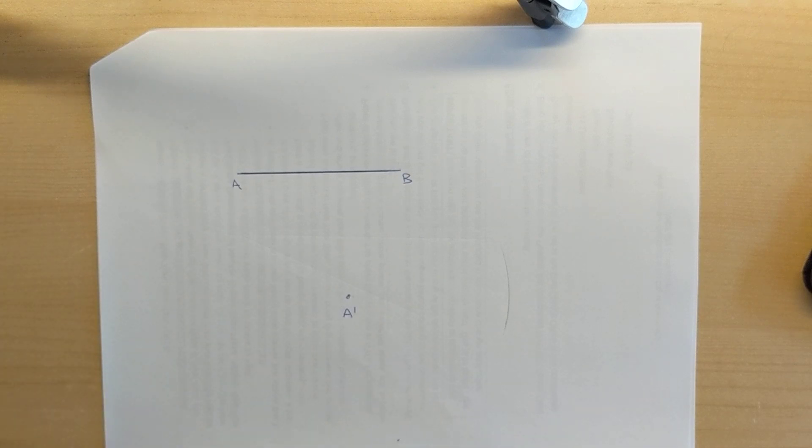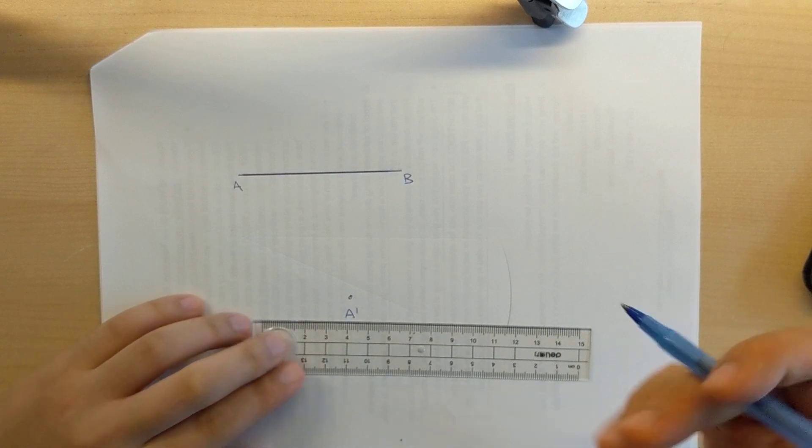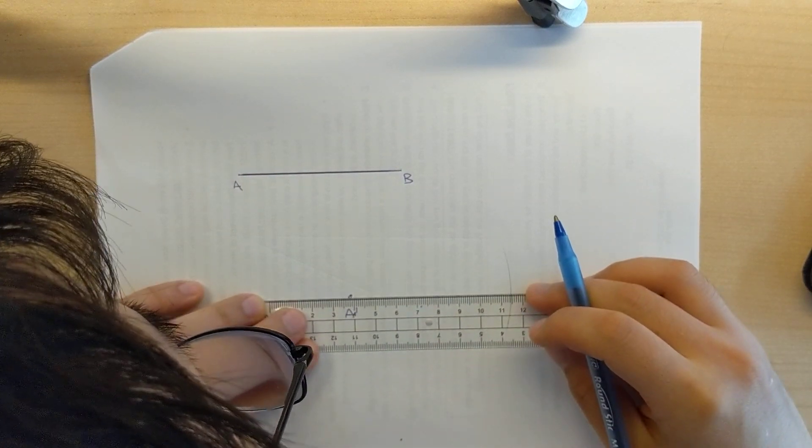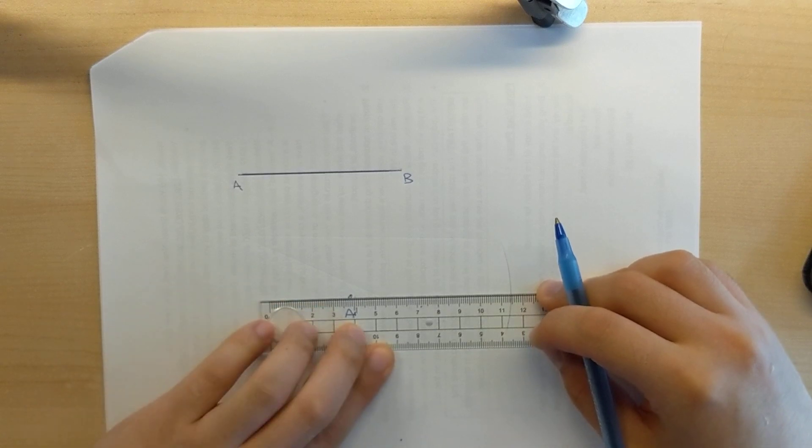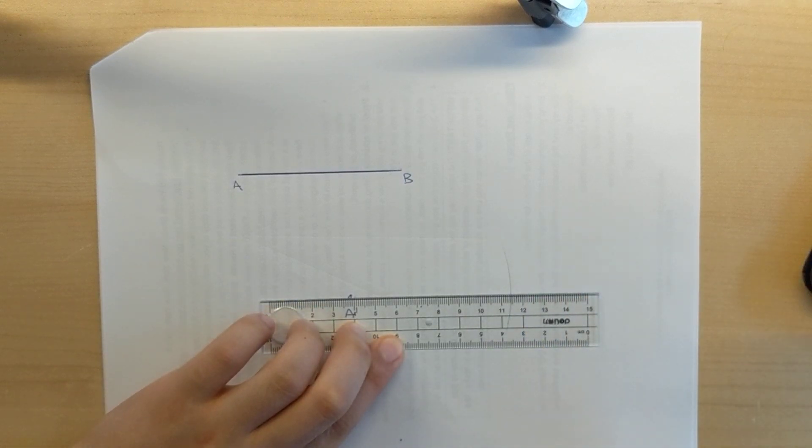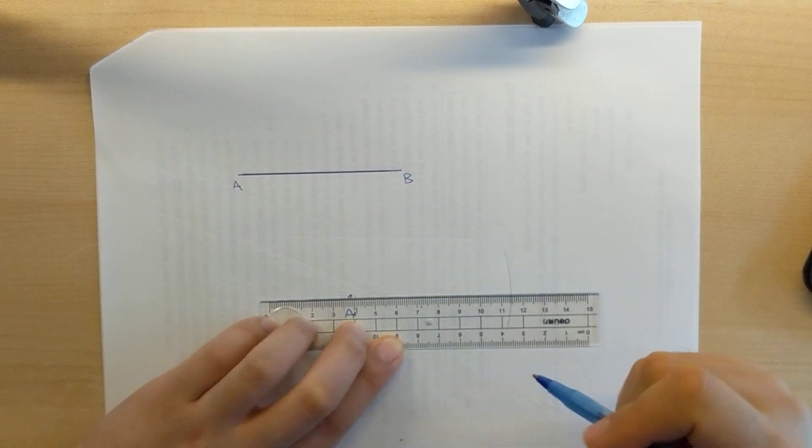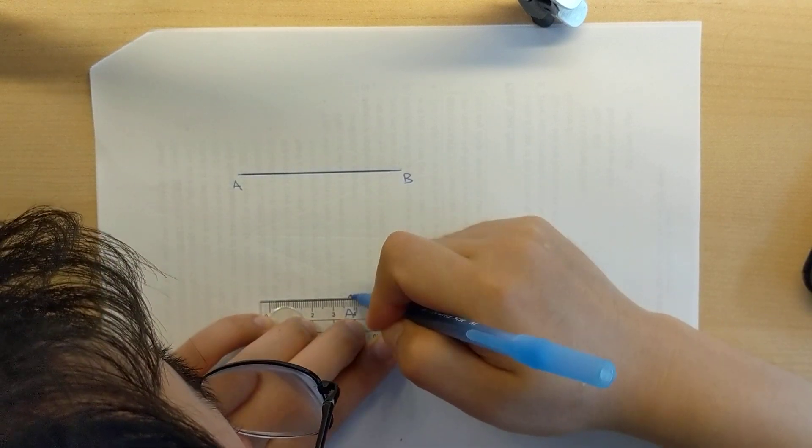So the last thing to do is you're going to take your straight edge. And again, you can pitch line segment A prime B prime at any angle you'd like and it really doesn't matter because all we're doing here, the purpose of this activity is to just copy line segment AB and I'm going to draw myself a line.